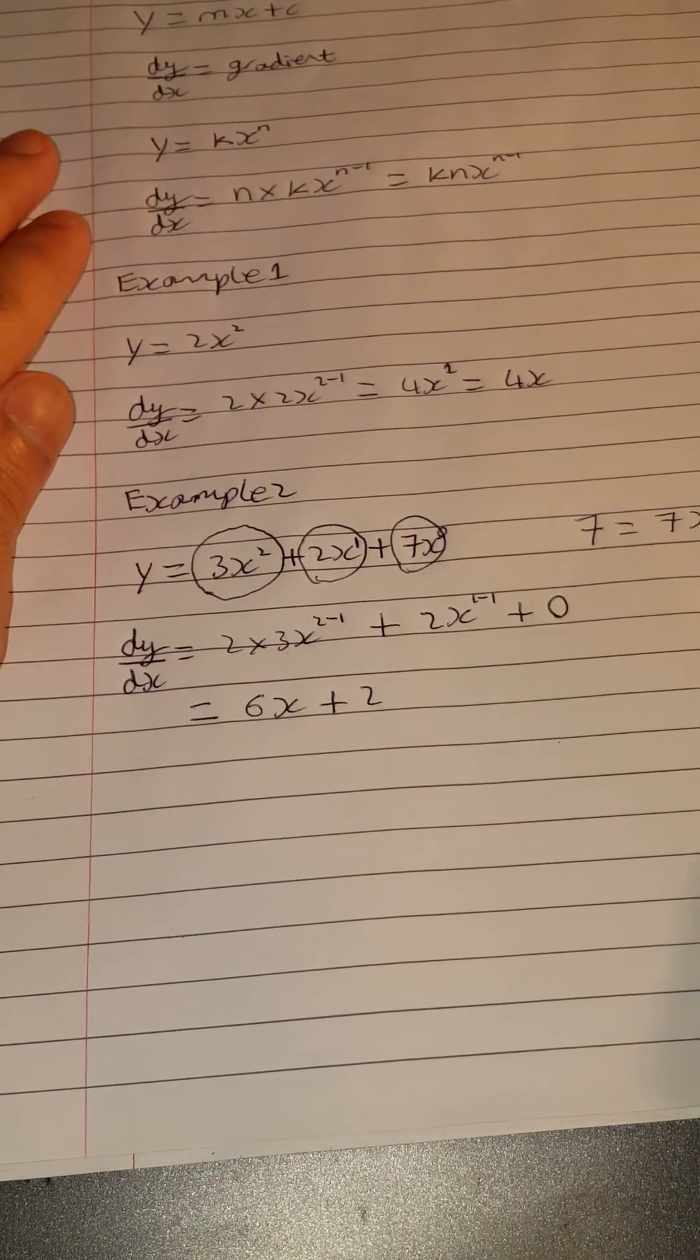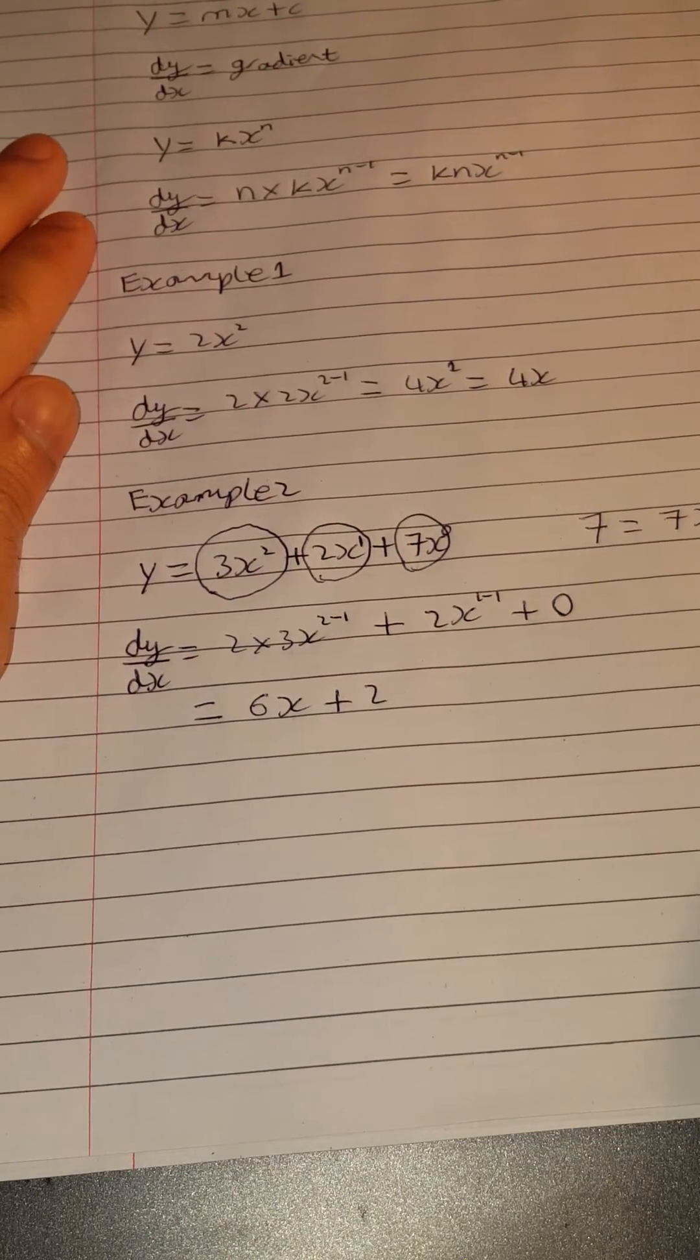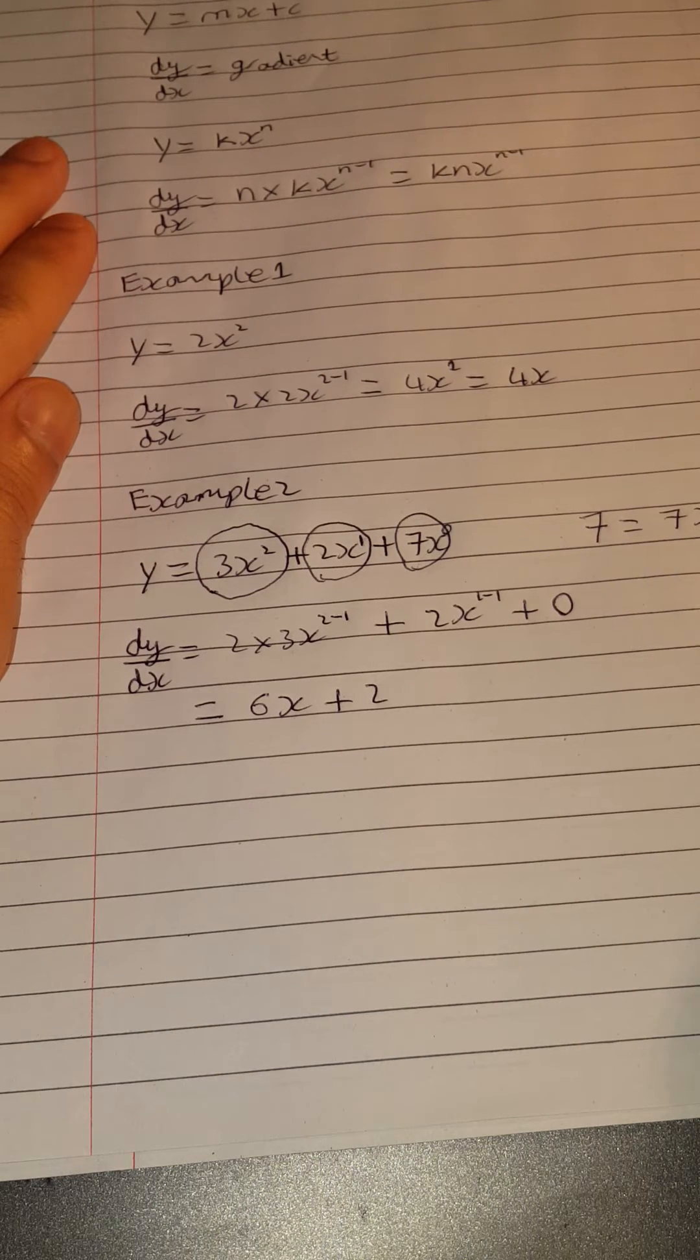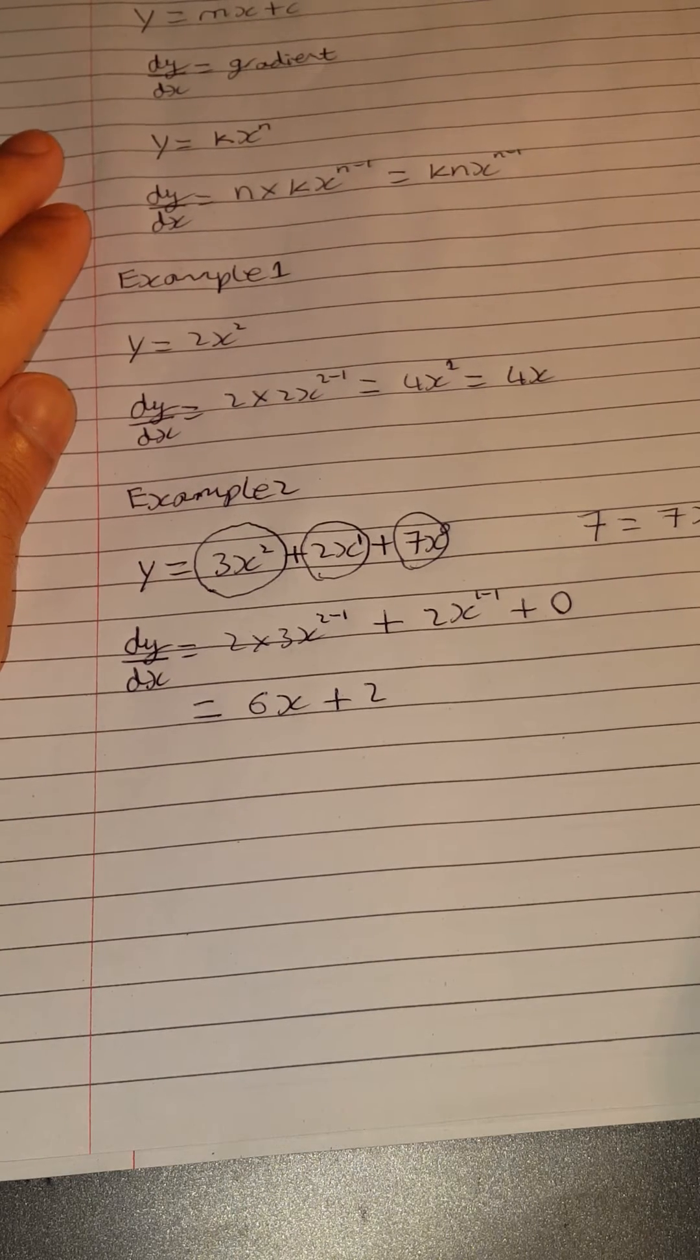So now we have 6x plus 2. So if y equals 3x squared plus 2x plus 7, then dy by dx equals 6x plus 2.